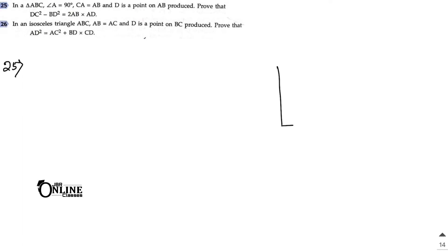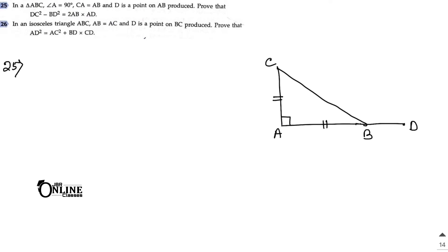Next, sum number 25: in triangle ABC, angle A = 90° and CA = AB, so it is an isosceles triangle. D is a point on AB produced. Prove that DC² − BD² = 2AB · AD. First, join DC.